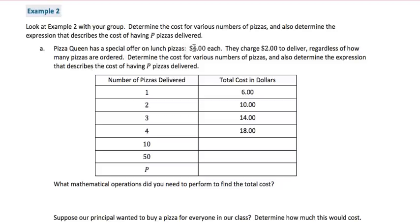If 10 are delivered, that's 40 for the pizzas, plus two more for delivery. And if 50 are delivered, 50 times four is $200, plus $2 more for delivery. So our expression then is $4 times the number of pizzas, plus $2 for the delivery. The mathematical operations we used were multiplication and addition.